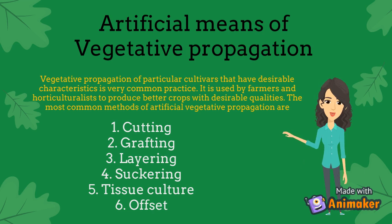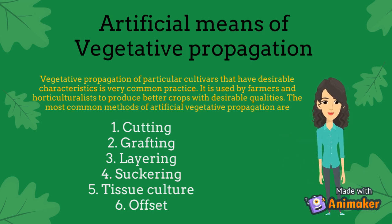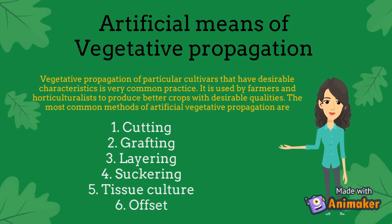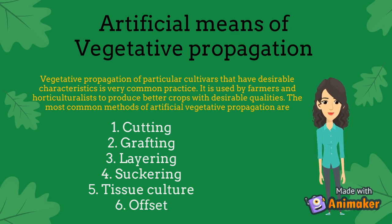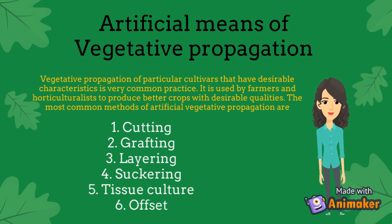Cutting: a cutting is a part of the plant — usually a stem or leaf — that is cut off and planted. Adventitious roots grow from cuttings and a new plant eventually develops. Usually those cuttings are treated with hormones before being planted to induce growth. Examples include rose and hibiscus.